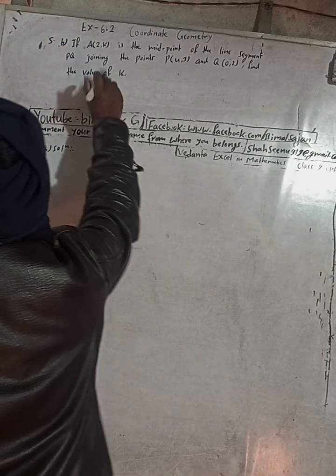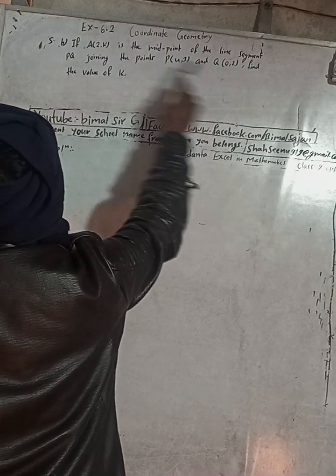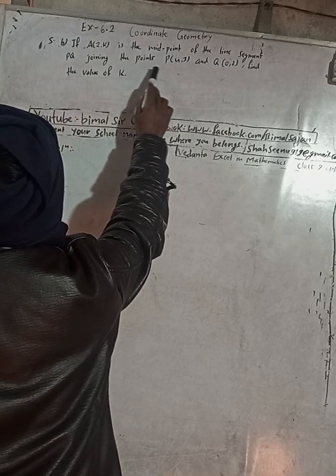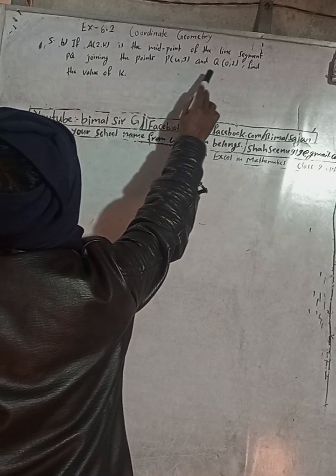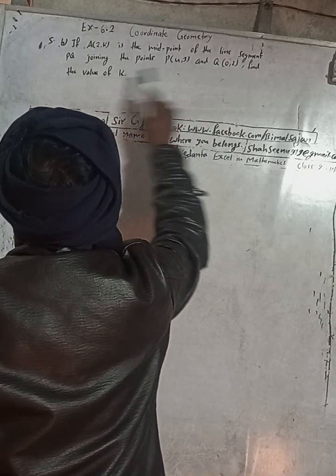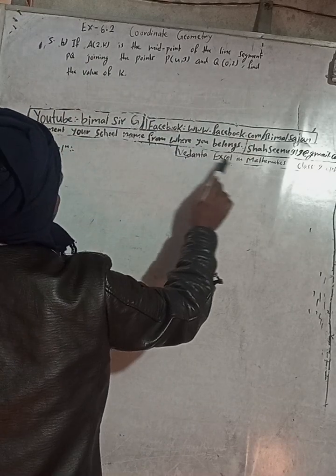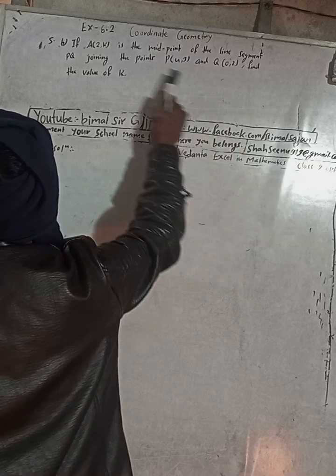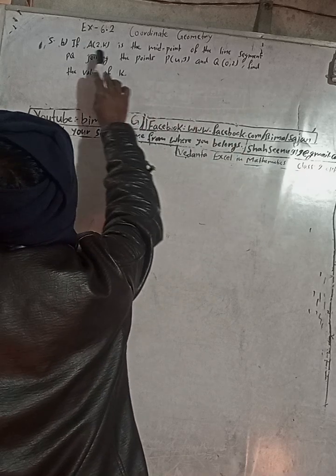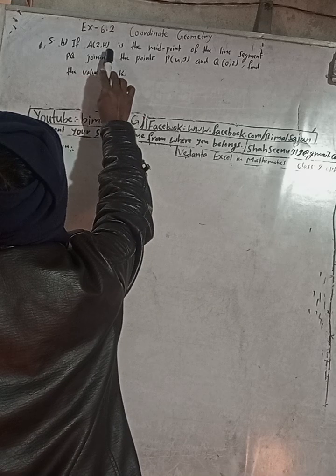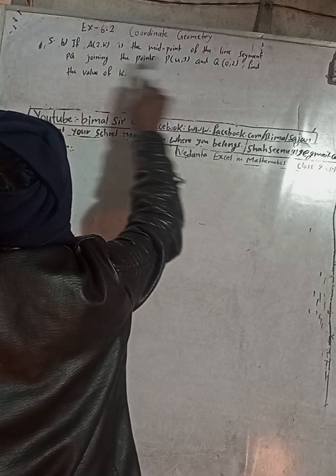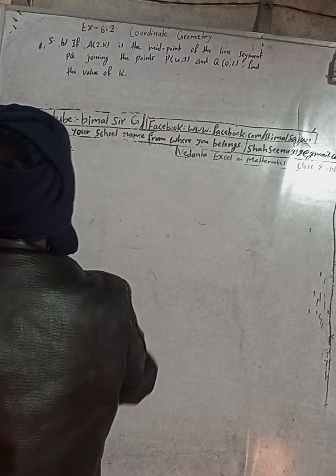This is question number 5b. The question is: if A(2, k) is the midpoint of the line segment PQ joining the points P(4, 3) and Q(0, 2), find the value of k. This is Exercise 6.2, coordinate geometry, optional mathematics class 9.